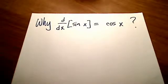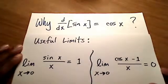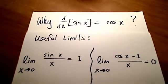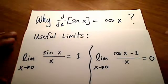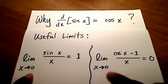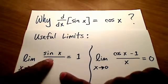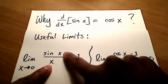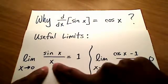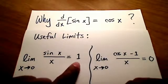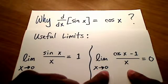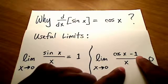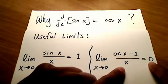A couple of things I want to point out first: there are a couple of useful limits that we're going to need, as well as some addition formulas for trigonometry. The first one is the limit as x goes to 0 of sine x over x, where the argument for sine is the exact same as the denominator, and that limit is equal to 1. The second limit we're going to use is as x approaches 0 for cosine x minus 1, all over x.